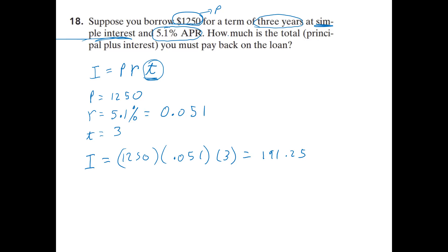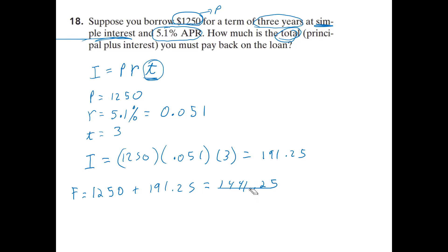That's just the interest. The total — the future value F — requires you to pay back the $1,250 plus all the interest accrued, $191.25. So 1,250 + 191.25 = $1,441.25. Make sure you read the problem and know what you're being asked to find — here we were asked for the total future value, not just the interest.